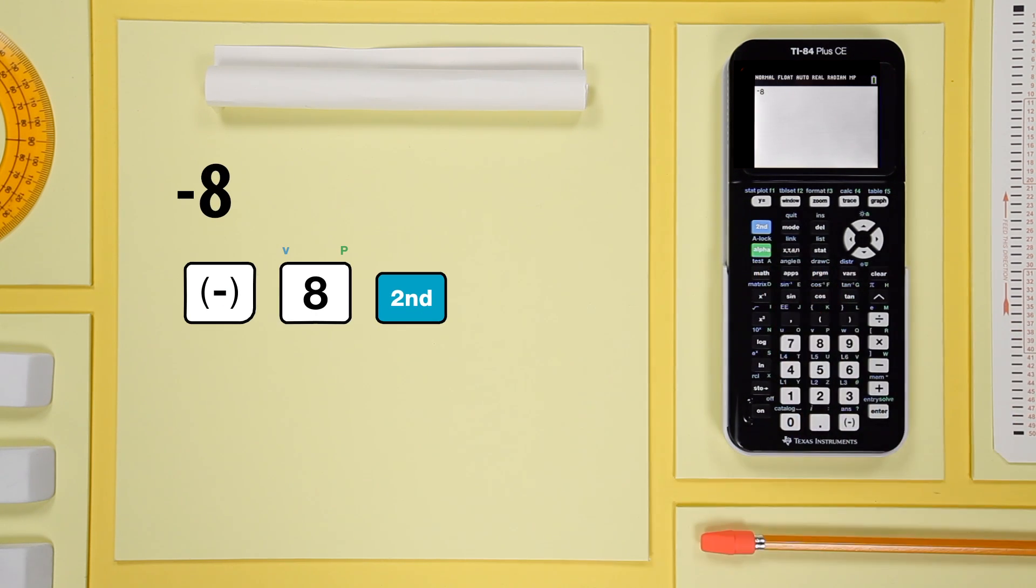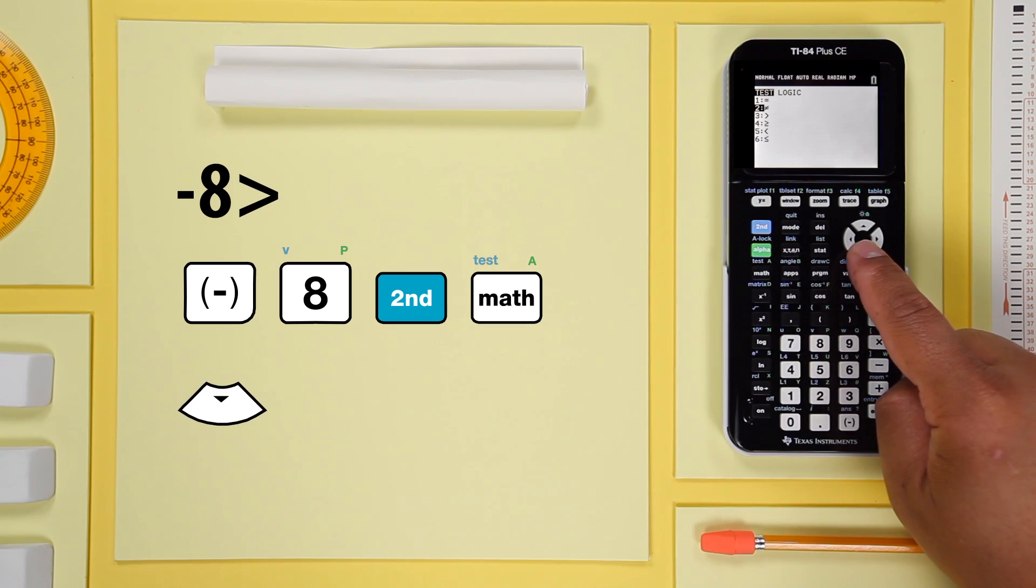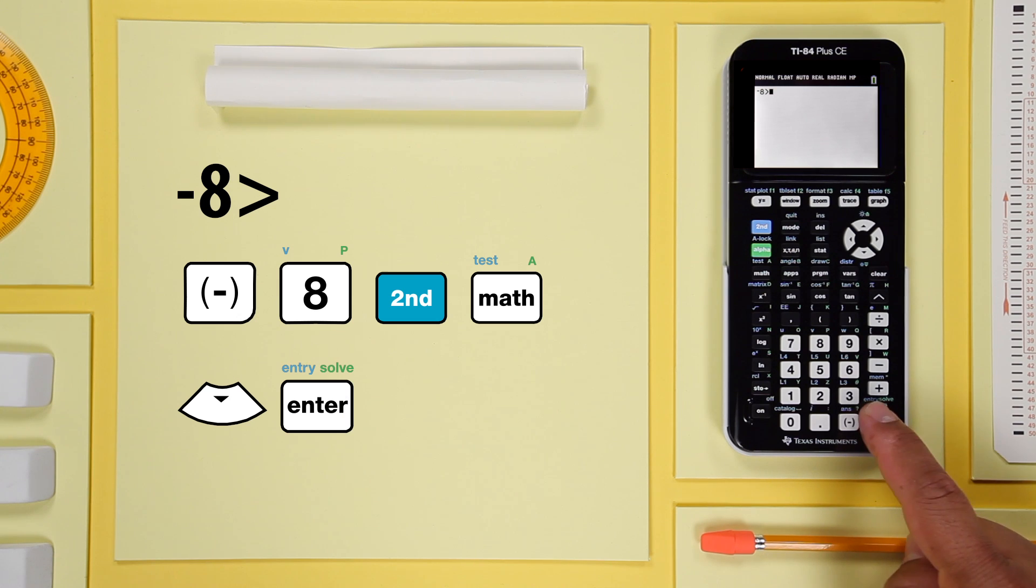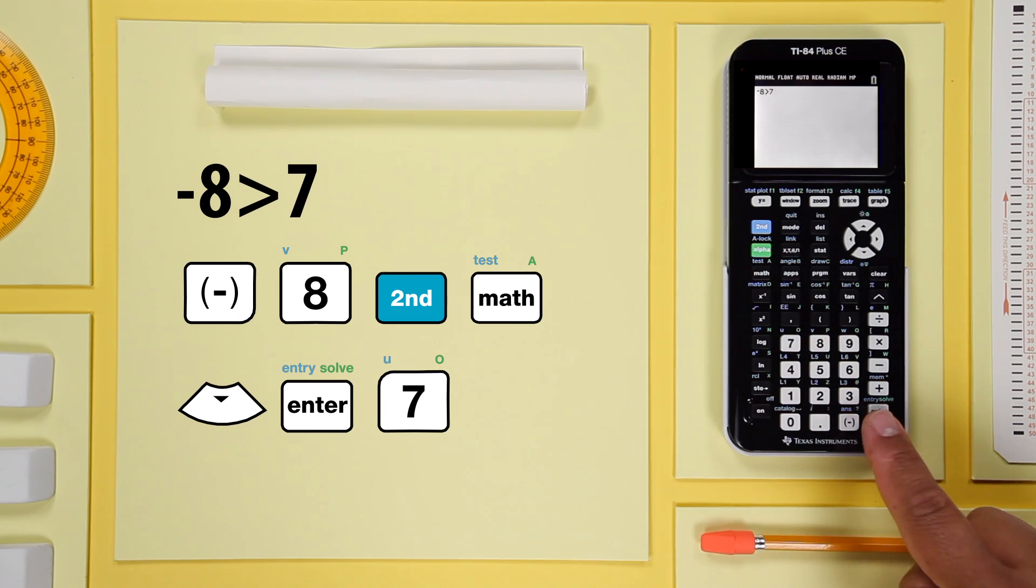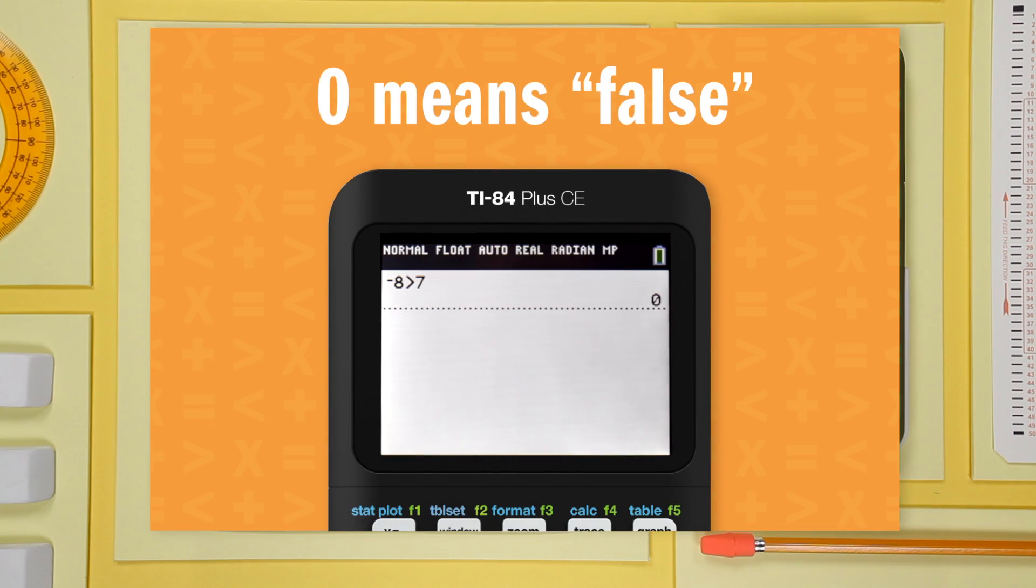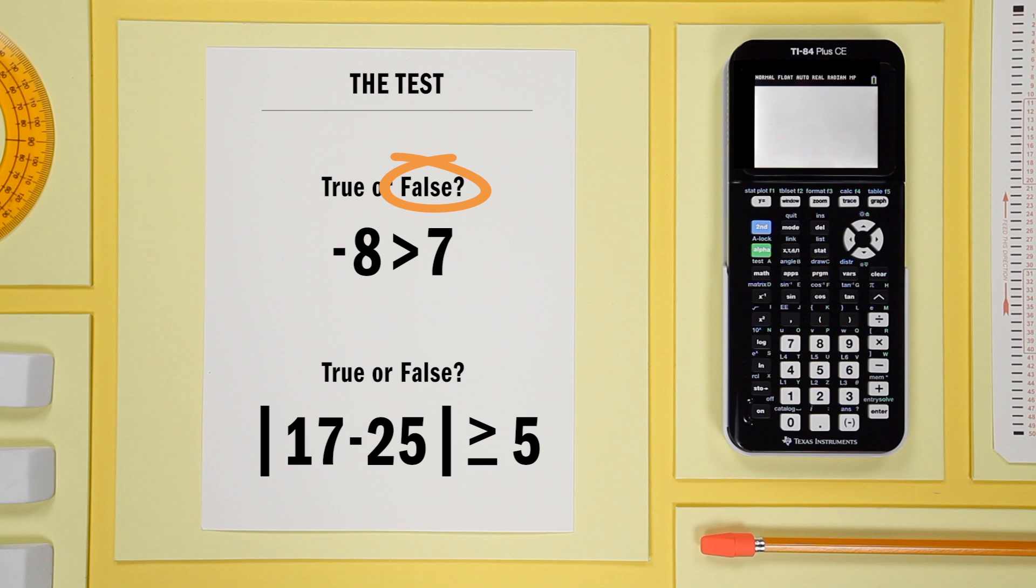Open the test menu. Scroll to the greater than sign. Select it and finish the statement. And the result is zero. That means the statement is false.